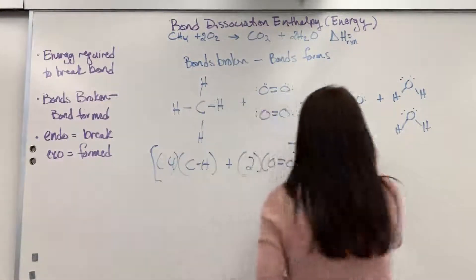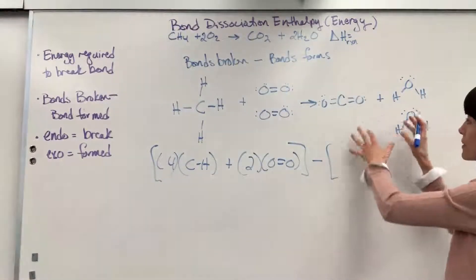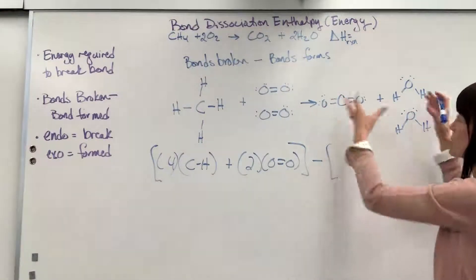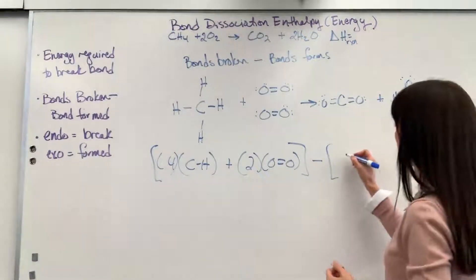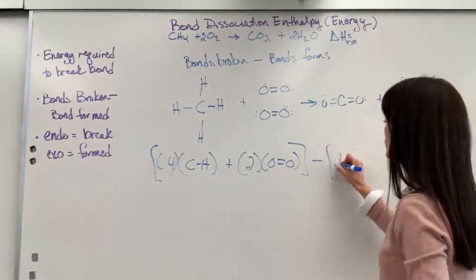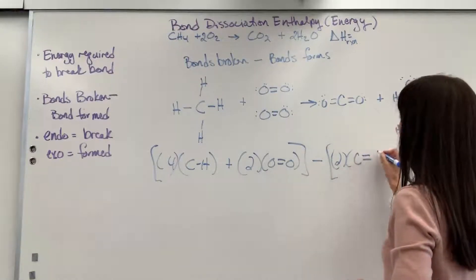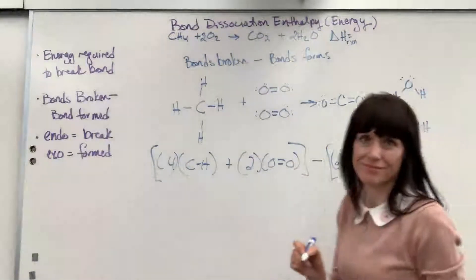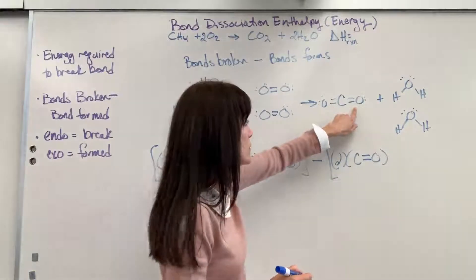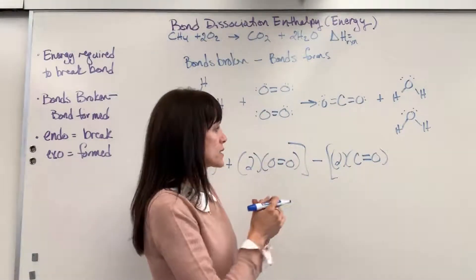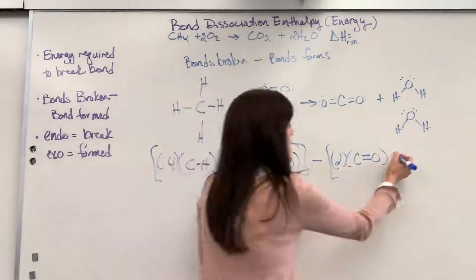Minus, let's put bracket, the energy that's released, that's the minus, when these bonds are formed. So we're going to have one, two, two of the carbon double bond oxygen. We're going to have two of those that we have to break. The carbon oxygen double bond.